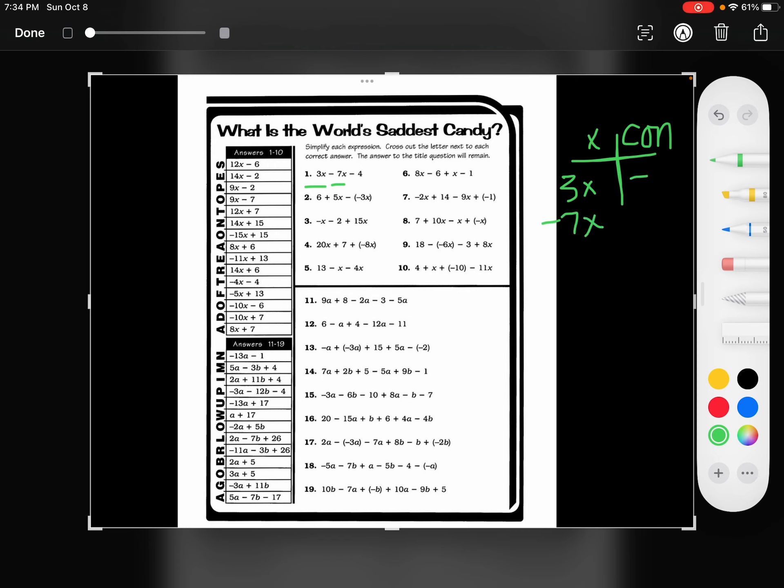So I have 3x minus 7x minus 4. My answer is going to be negative 4x minus 4. It says cross out the letter next to each correct answer. So that would be right here.